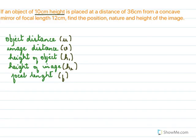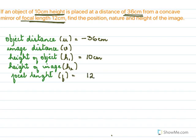Next problem: object height h1 = 10 centimeters, placed at 36 centimeters from a concave mirror, so u = −36 cm. Focal length is 12 centimeters, and since it is concave, f = −12 cm. We need to find the position, nature, and height of the image. We use the mirror formula.